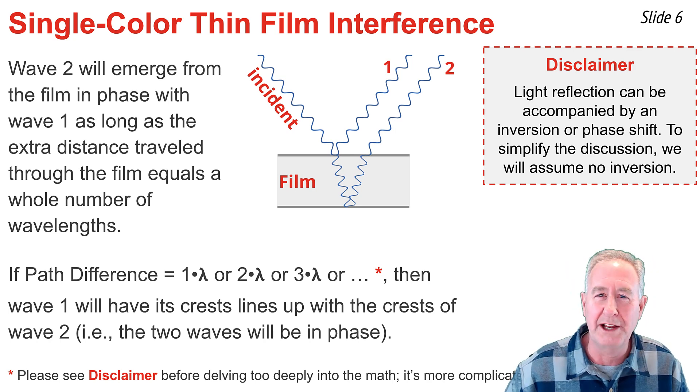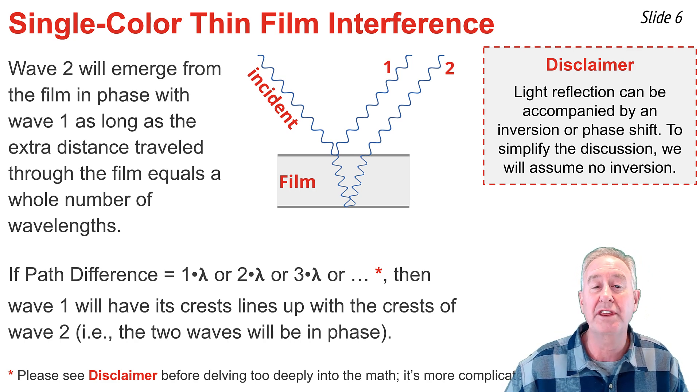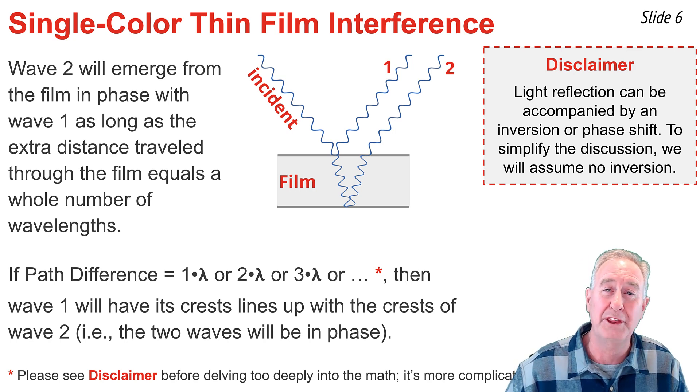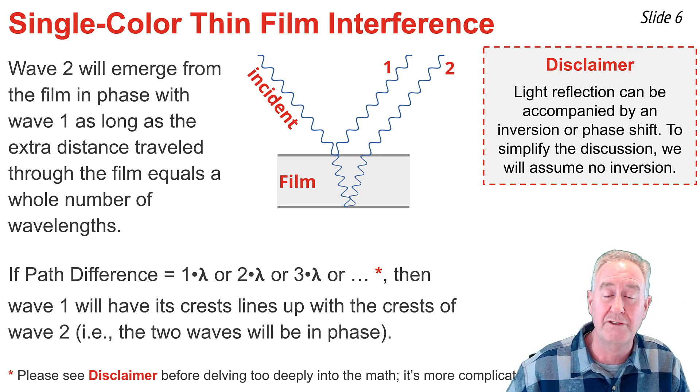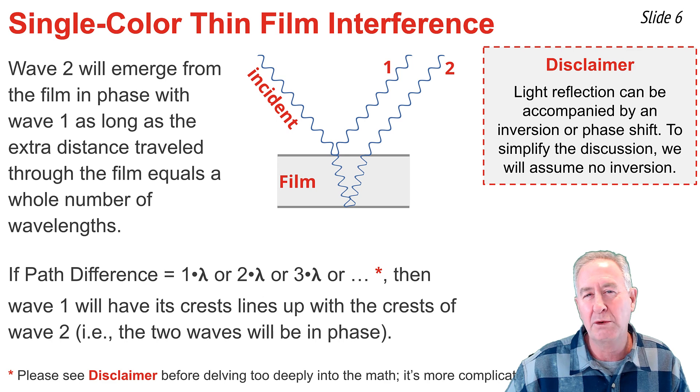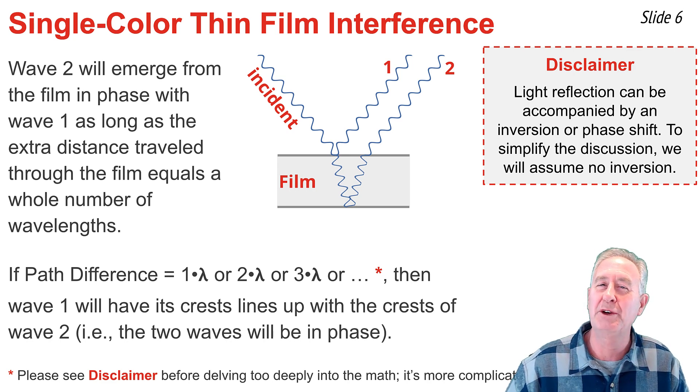Now, I have to discuss a nuance here. You'll notice the disclaimers all over the screen. And the nuance is that we understand that any wave, like a light wave, can undergo inversion or a phase shift when reflecting off a material that's more dense than the material that it's in. In other words, wave 1 could undergo a phase shift or inversion, turning its crest into a trough. And wave 2, upon reflection off the bottom of the film, could also undergo an inversion or phase shift, turning its crest into a trough. And to really get the mathematics right, I have to consider whether wave 1 or wave 2, or both wave 1 and 2, or neither wave 1 or 2, undergo this phase shift.